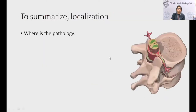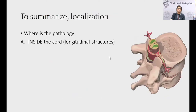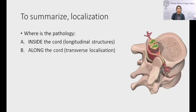To summarize spinal cord localization: we need to identify the longitudinal structures affected along the cord and determine the transverse localization.